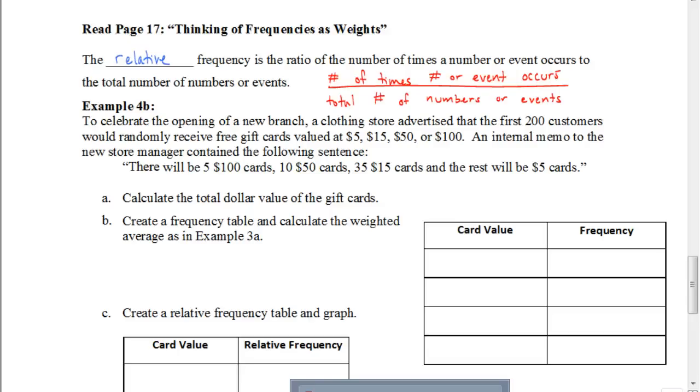To celebrate the opening of a new branch, a clothing store advertised that the first 200 customers would randomly receive free gift cards valued at $5, $15, $50, or $100. An internal memo to the new store manager contained the following sentence: There will be five $100 cards, 10 $50 cards, 35 $15 cards, and the rest will be $5 cards.